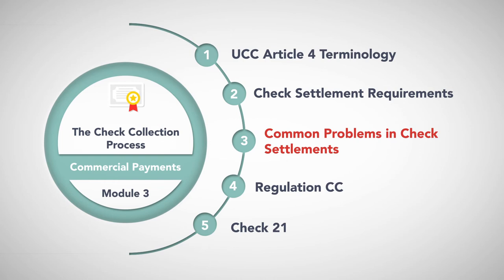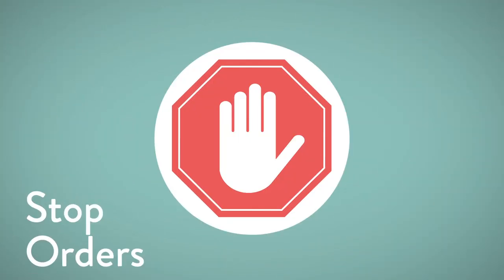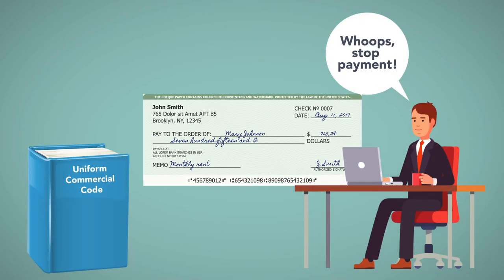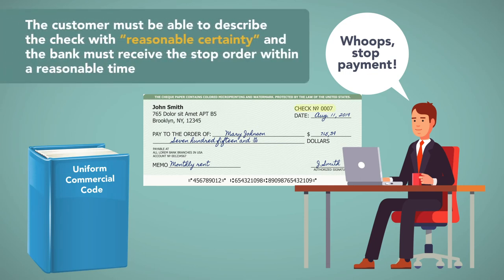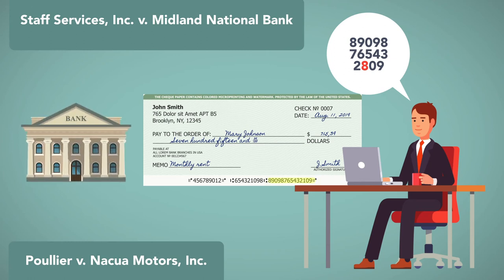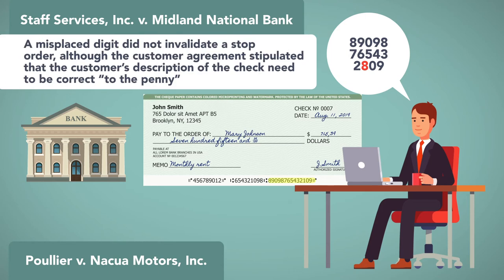Common Problems in Check Settlements — Stop Orders. After issuing a check, a customer might want to stop payment, and the code gives customers this right with some restrictions. The customer may be able to describe the check with reasonable certainty, and the bank must receive the stop order within a reasonable time. Courts are divided on whether a small deviation in the customer's description would absolve the bank of liability; sometimes it comes down to the agreement the customer has with the bank.